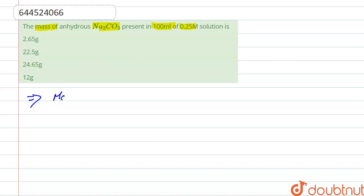Moles of Na2CO3 is calculated by molarity into volume. Right, so here molarity is 0.25 and volume is 100 ml, so we convert it into liter, so it is 0.1.